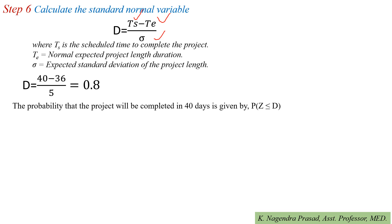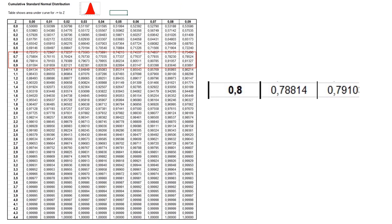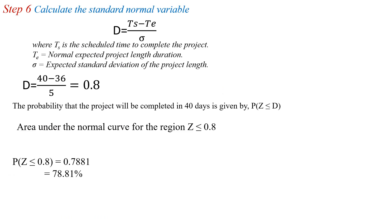Next, determine the probability that the project will be completed in 40 days, given by P(Z ≤ 0.8). From the standard normal distribution table, P(Z ≤ 0.8) = 0.7881. In percentage terms, this is 78.81%.